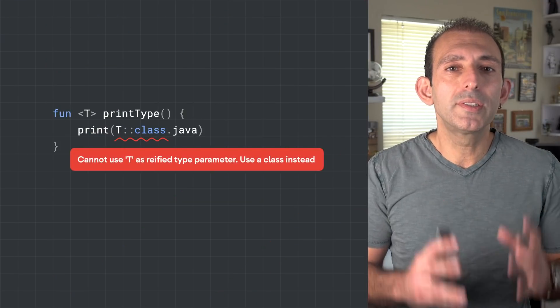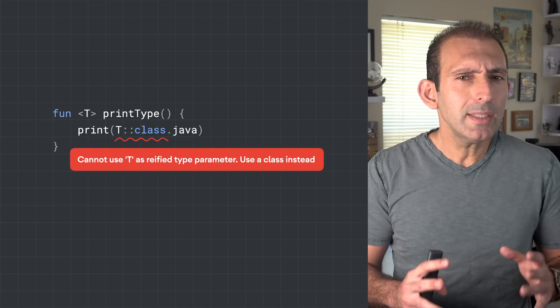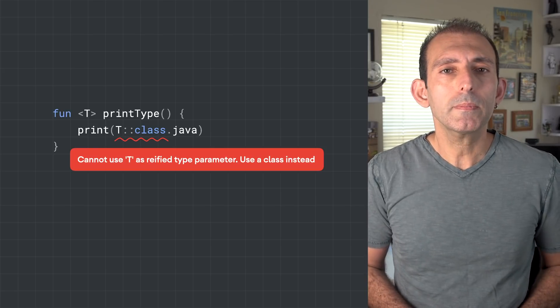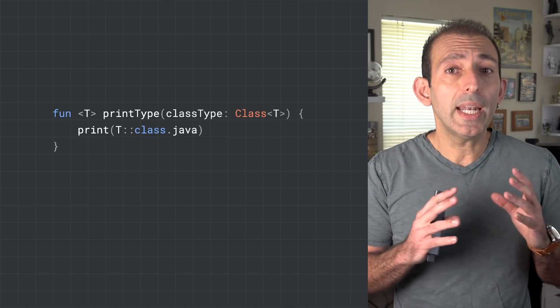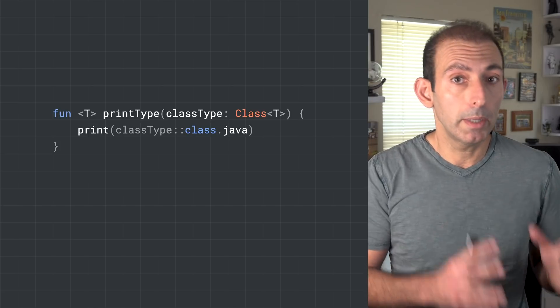The missing type info is a result of how generics are implemented in the JVM — type erasure, which we will discuss later. As a workaround, you can access the deleted generic type by passing the class of the generic type as a parameter of the function. This isn't too bad, but Kotlin addresses the problem with a unique keyword, reified. With reified, you can access the type info from within a generic function. If you are familiar with how generics work, you might be asking how this is even possible. Let's see how.